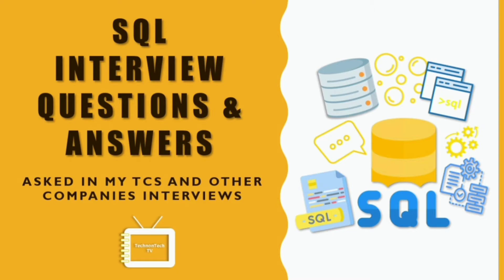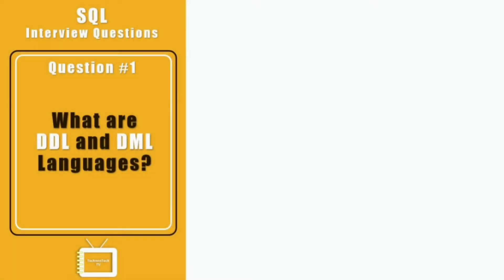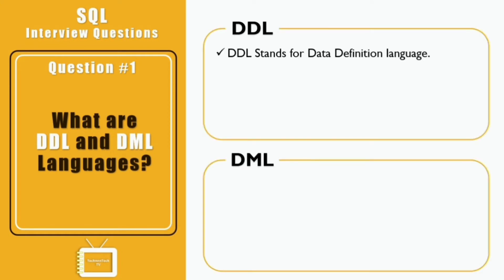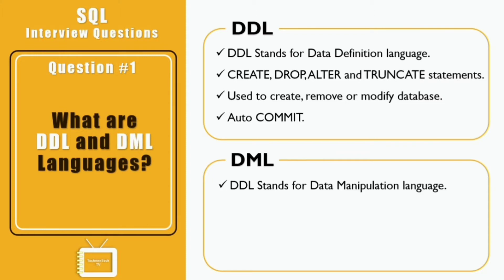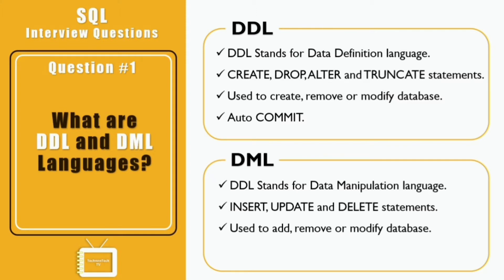First question: what are DDL and DML languages? DDL stands for Data Definition Language. It includes CREATE, DROP, ALTER, and TRUNCATE statements and is used to create, remove, or modify database objects like tables. You do not need to commit changes after running DDL commands — it is auto-commit. DML stands for Data Manipulation Language. It includes INSERT, UPDATE, and DELETE statements and is used to add, remove, or modify data from a database table.